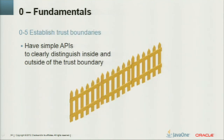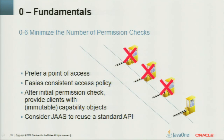Establish trust boundaries. Have simple APIs that clearly distinguish who you can trust versus who is outside your trust boundary. Minimize the number of permission checks — prefer an easy, consistent access policy. After an initial permission check, provide clients with an immutable capability object, and consider JARs to reuse a standard API rather than writing it yourself, which probably introduces bugs.